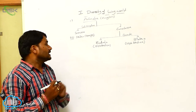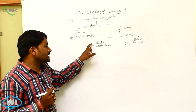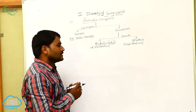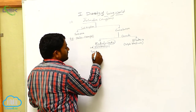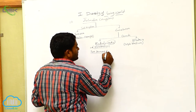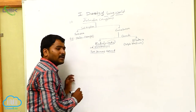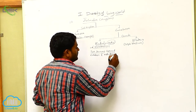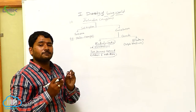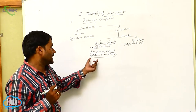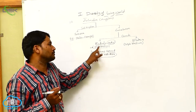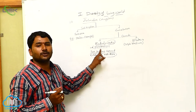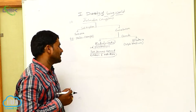Radiata refers to Eumetazoa with radial symmetry. Diploblastica means two primary germinal layers are present — these are ectoderm and endoderm. These are the layers formed during embryonic development for the first time. So individuals with radial symmetry and two primary germinal layers are grouped as Radiata, which are Diploblastica.